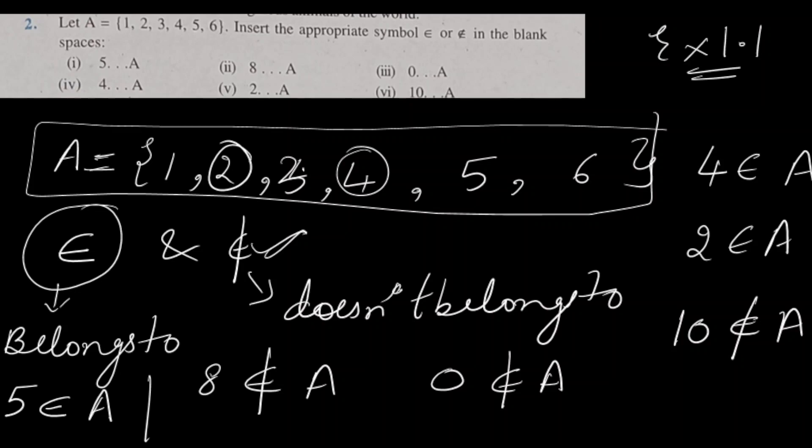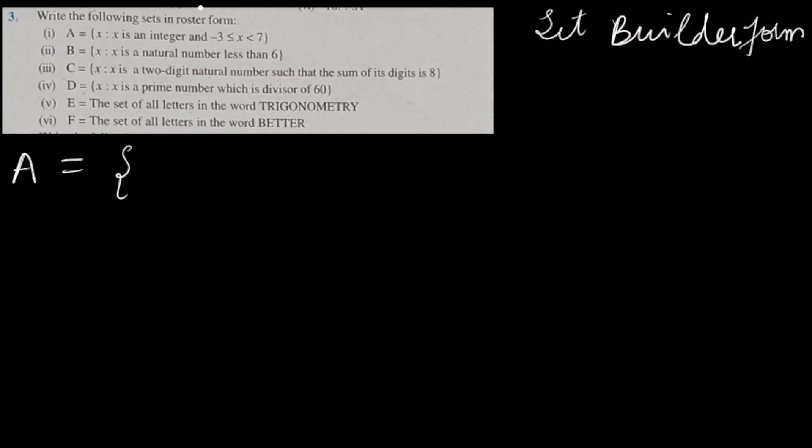It was very easy. Let's do the next question — question number 3. In question number 3, we have to write the following sets in roster form. In roster form, all the elements we have to mention. Here set-builder form is given to us, which means one characteristic is given. Set A: X is an integer, and the range is X ≥ -3 and X < 7.